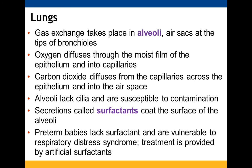Gas exchange takes place in the alveoli — these air sacs. Oxygen moves through the moist film of the epithelium into the capillaries there, and carbon dioxide moves in the opposite direction. The air has a greater partial pressure of oxygen, while the capillaries have a greater concentration of carbon dioxide. Alveoli don't have cilia, so they don't have ways to get rid of materials that should not be there — they are more susceptible to contamination. They secrete surfactants that coat them, reducing surface pressure so they're less likely to collapse.